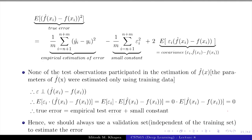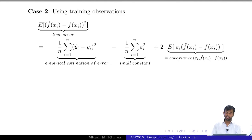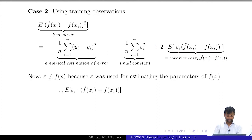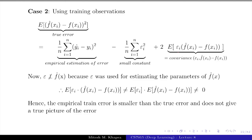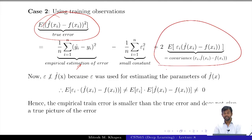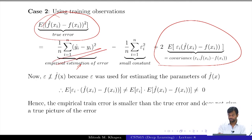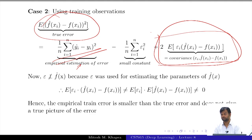Now let's see what happens if we estimated the error from the training data. The covariance term would not disappear because epsilon_i and f-hat(x_i) are no longer independent — the training noise influenced the learned parameters. We cannot write it as a product of two expectations, so it will not go down to zero. Hence the true error equals empirical training error plus something extra, meaning the empirical training error is optimistic.